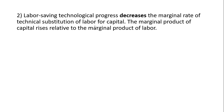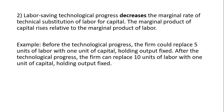We could have labor-saving technological progress, and this decreases the marginal rate of technical substitution of labor for capital. The marginal product of capital rises relative to the marginal product of labor. For example, before the technological progress, a firm could replace five units of labor with one unit of capital, holding output fixed. Given the technological progress, the firm can now replace ten units of labor with one unit of capital, holding output fixed. So this would be referred to as labor-saving technological progress.